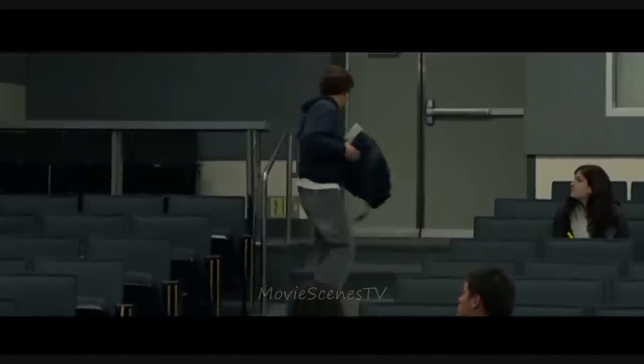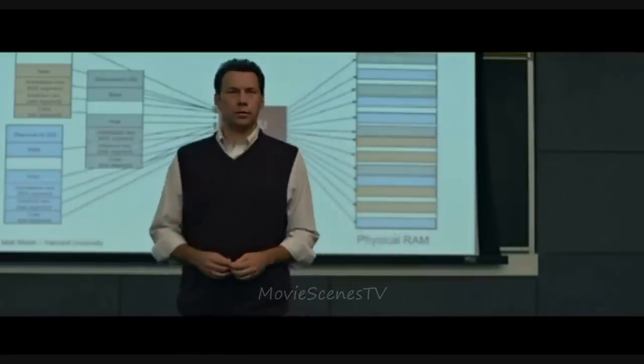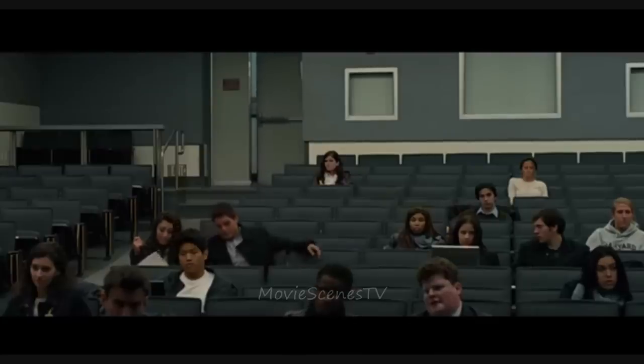One valid bit, one modified bit, one reference bit, five permission bits. That is correct. Does everybody see how he got there?